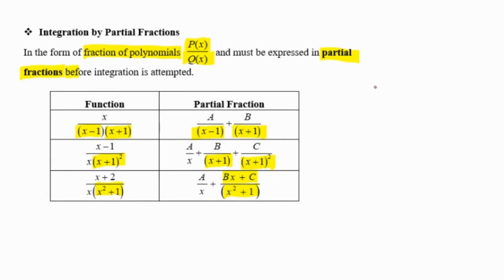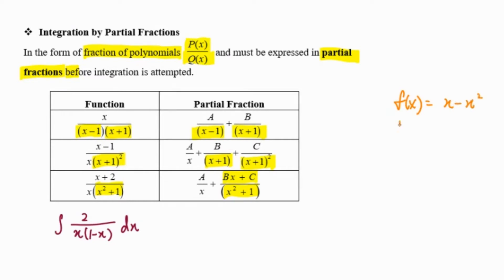Now let's look at some examples. We want to integrate 2 over x(1-x) dx. Notice that we cannot integrate this by formula, because when we have f(x) as the denominator function, x minus x squared, when we differentiate it we get 1 minus 2x at the numerator. So we cannot get the numerator to match the differentiated function, meaning this form does not fulfill our formula criteria.